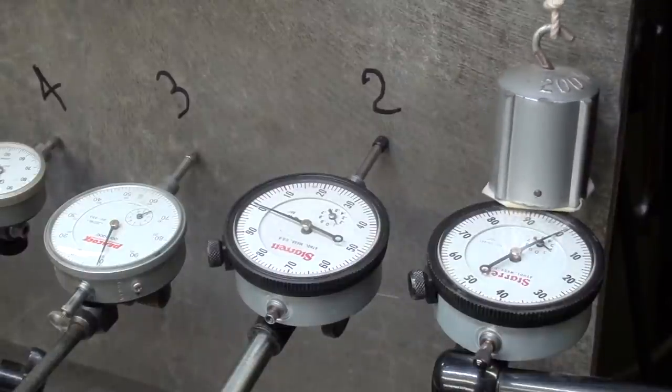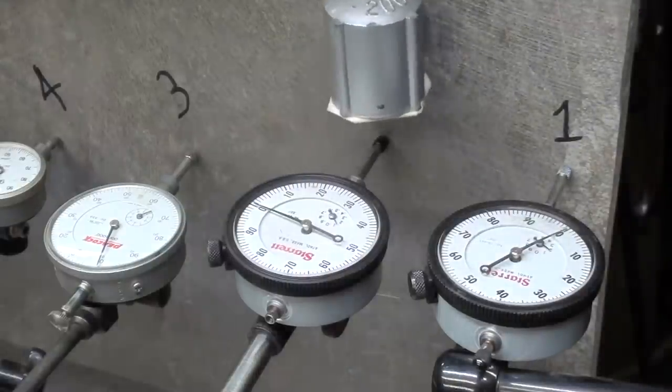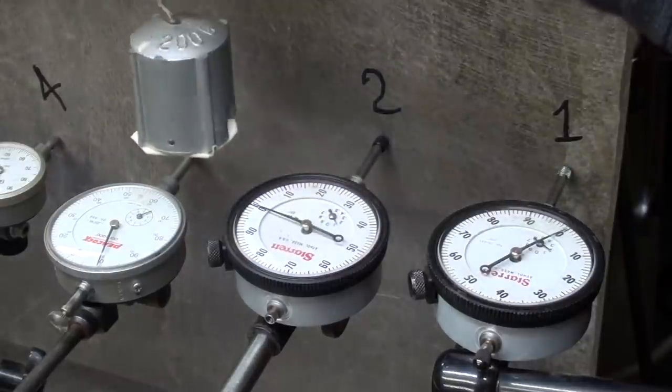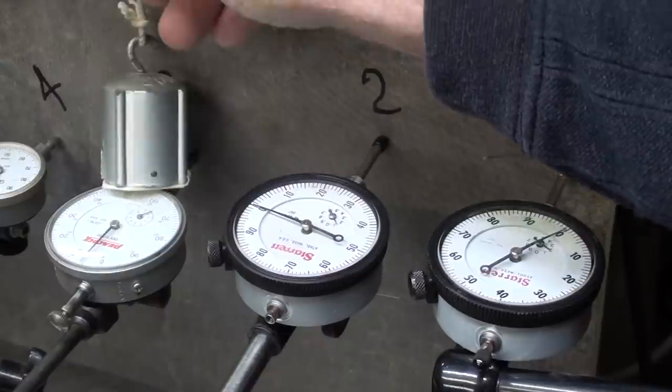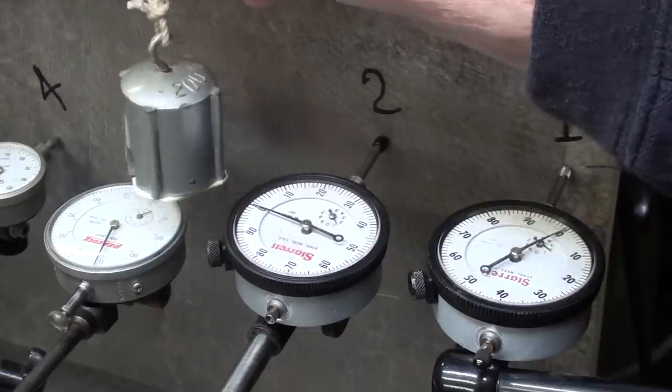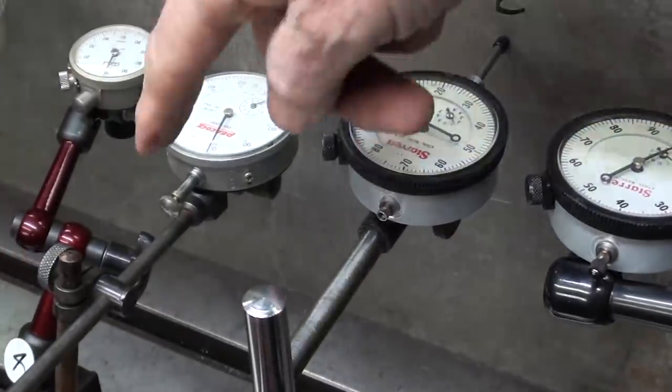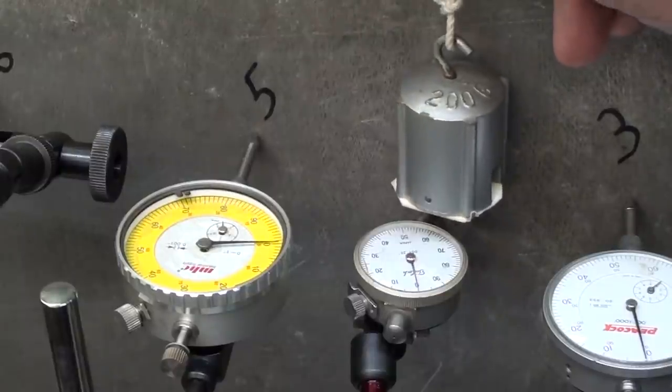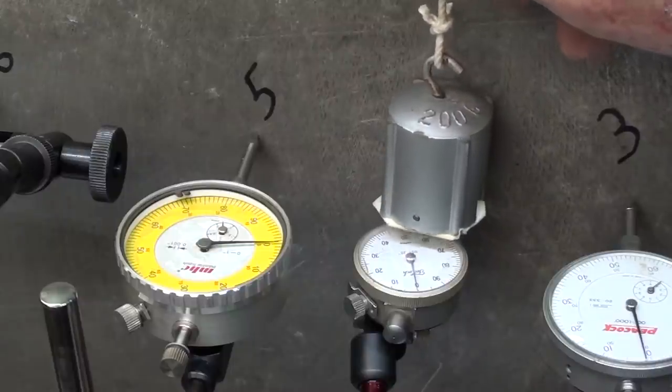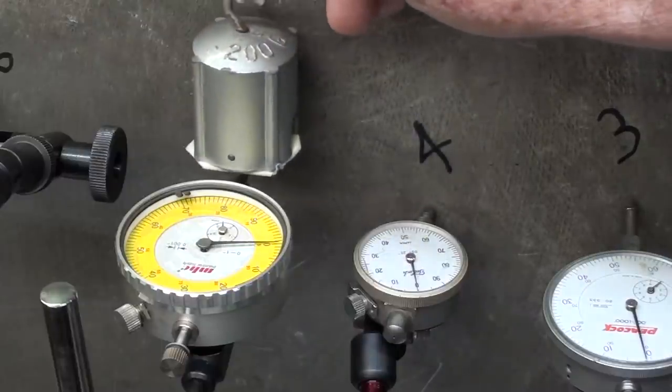200 grams on the Noga. It looks like it moved imperceptibly, perhaps one-fourth of a thousandth, two-tenths. This one, about the same, almost no movement. On this one, about two-thousandths, so I would have expected that because of how slender it is right here. Number four, amazingly rigid, it didn't register at all, but of course it's the shortest one.